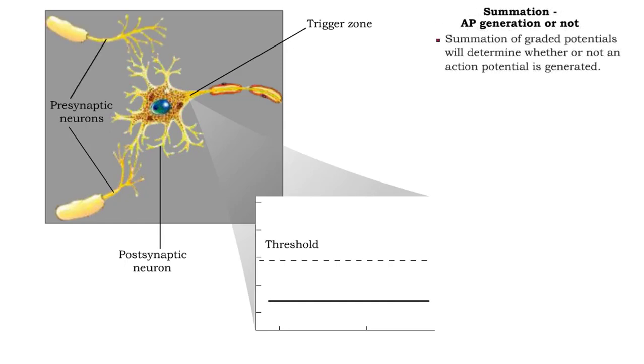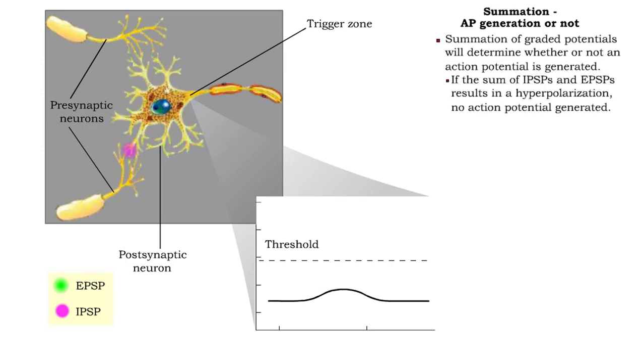Summation can result in three possible scenarios. IPSPs and EPSPs may summate and result in hyperpolarization of the membrane. In this case, no action potential will be generated.